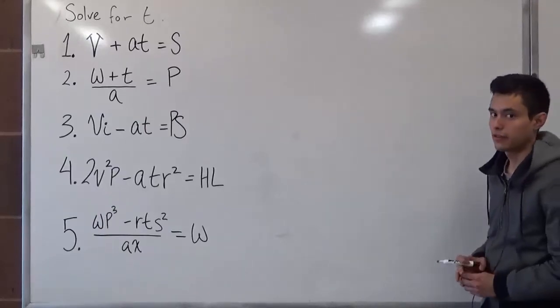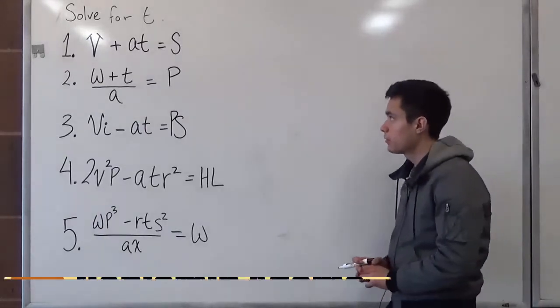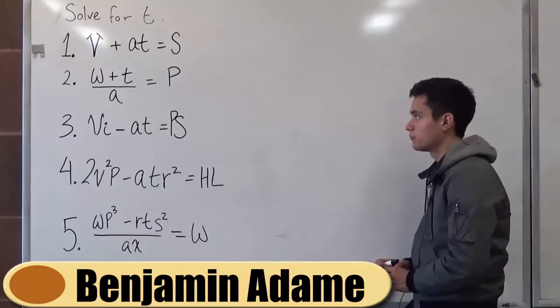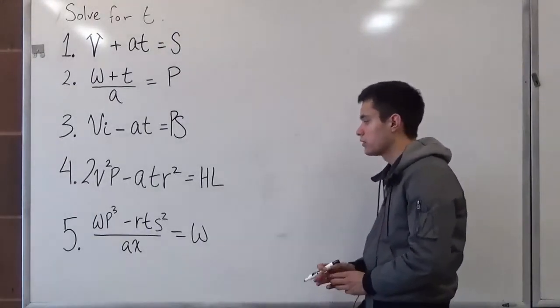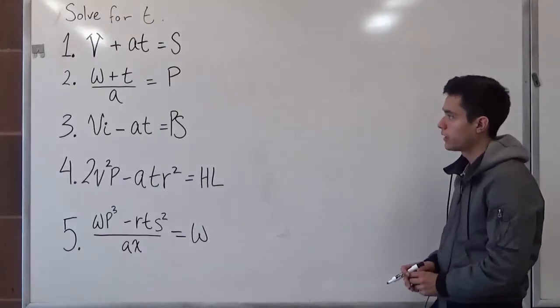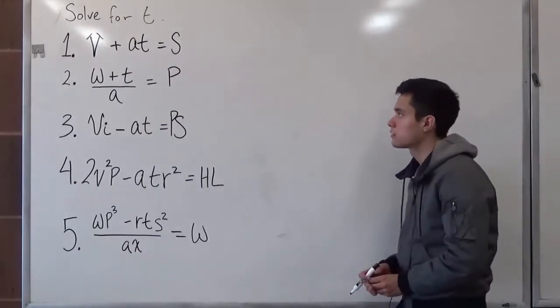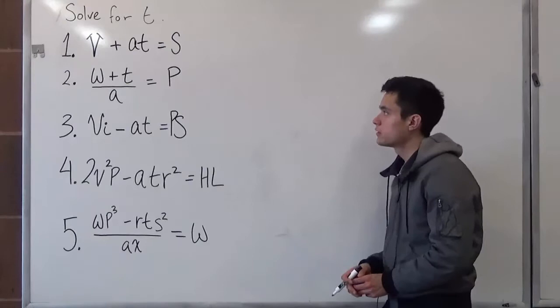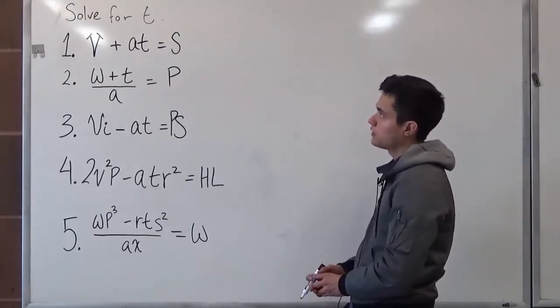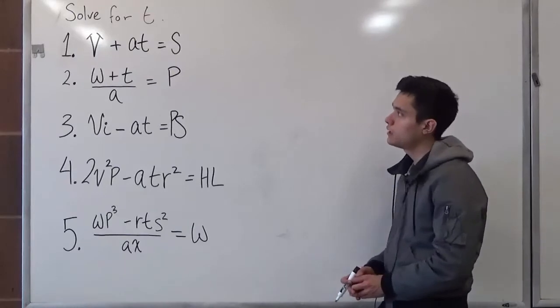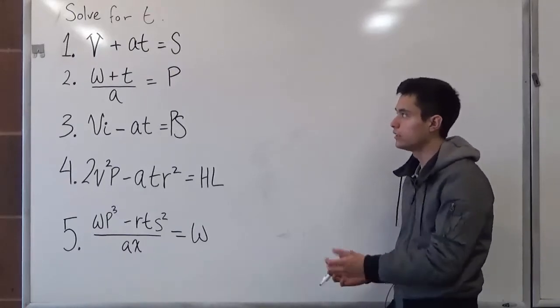Hi, welcome to helpyourmath.com. Today we're going to be solving these five problems, ranging from easy to particularly challenging. But by the end of this, you should be able to know how to do this. So the problem is we want to solve for t for all of them. So what this means is that we want t on one side, and only t.